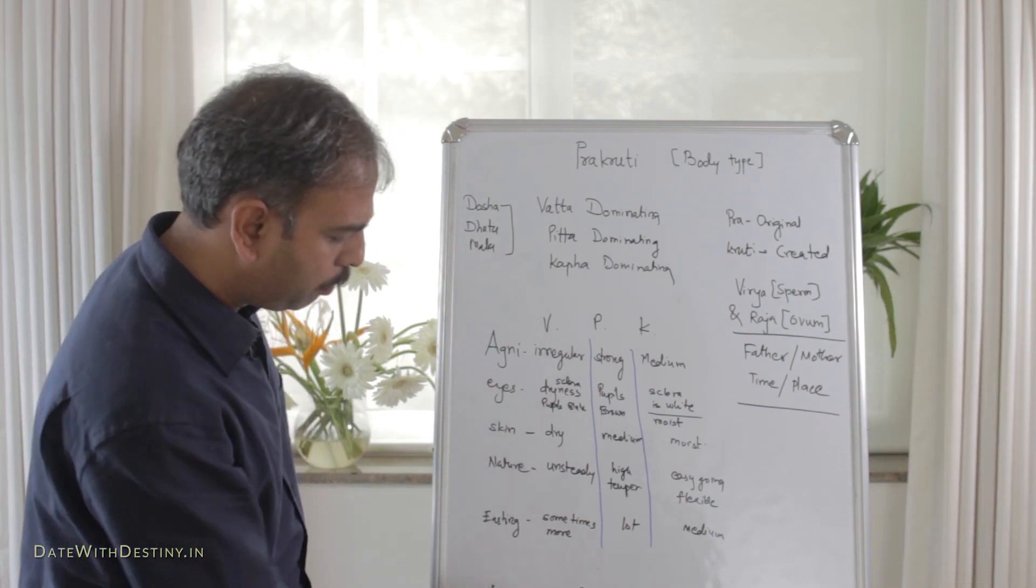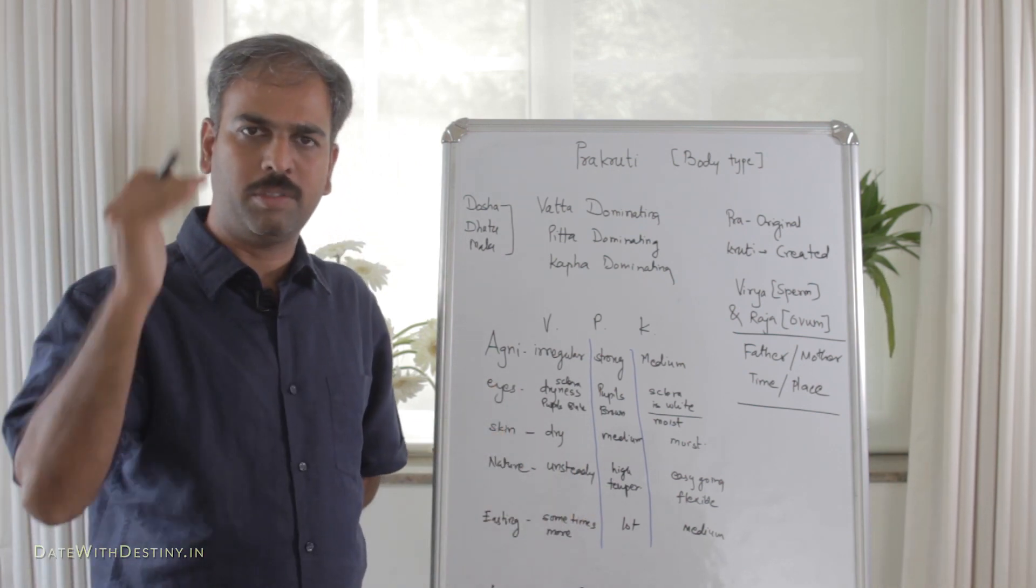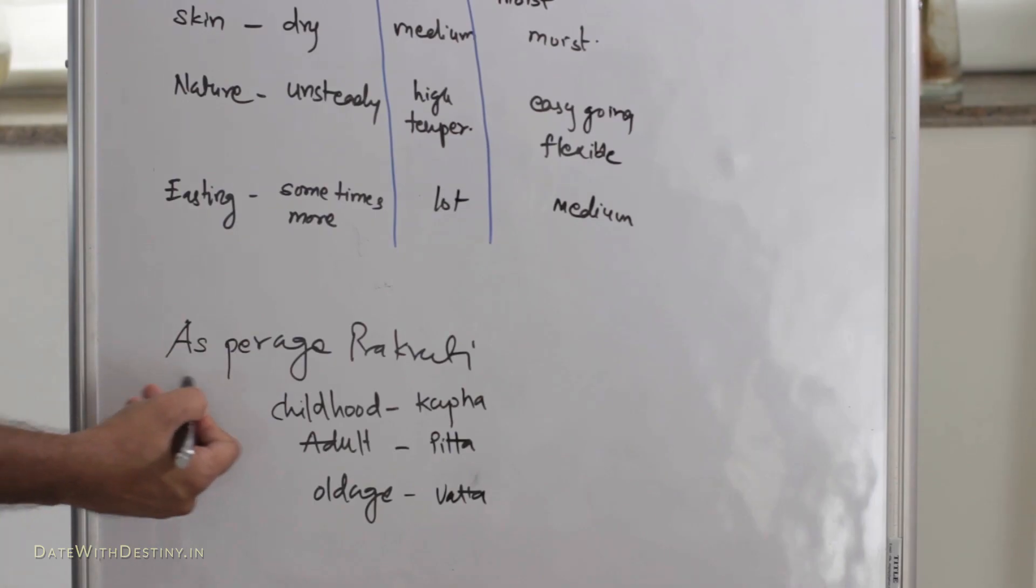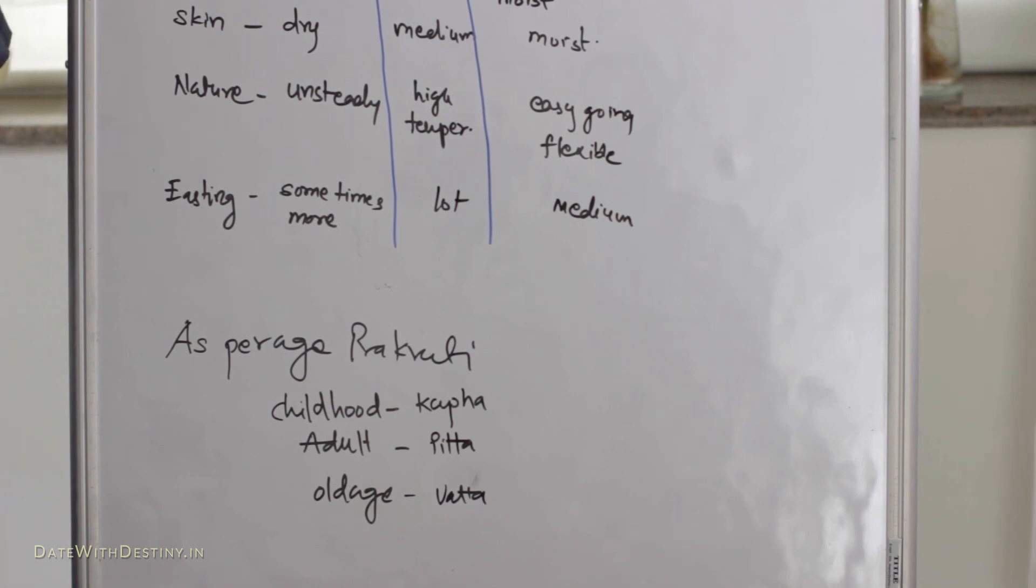Like Prakruti. Then, the time period, which is called as Kala in Ayurveda. So as per age, Prakruti is like childhood, it is Kapha Prakruti. In adults, it is Pitta Prakruti. While in old age, it is Vata Prakruti.